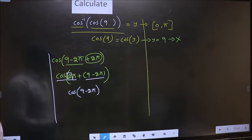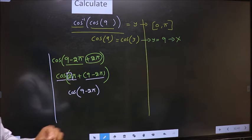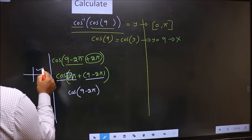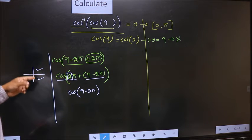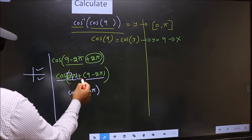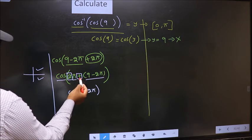And all the even multiples of pi lie in either the first or the fourth quadrant. So now, to select the quadrant, we should look at this symbol. Here we have plus, that means the angle lies in the first quadrant.